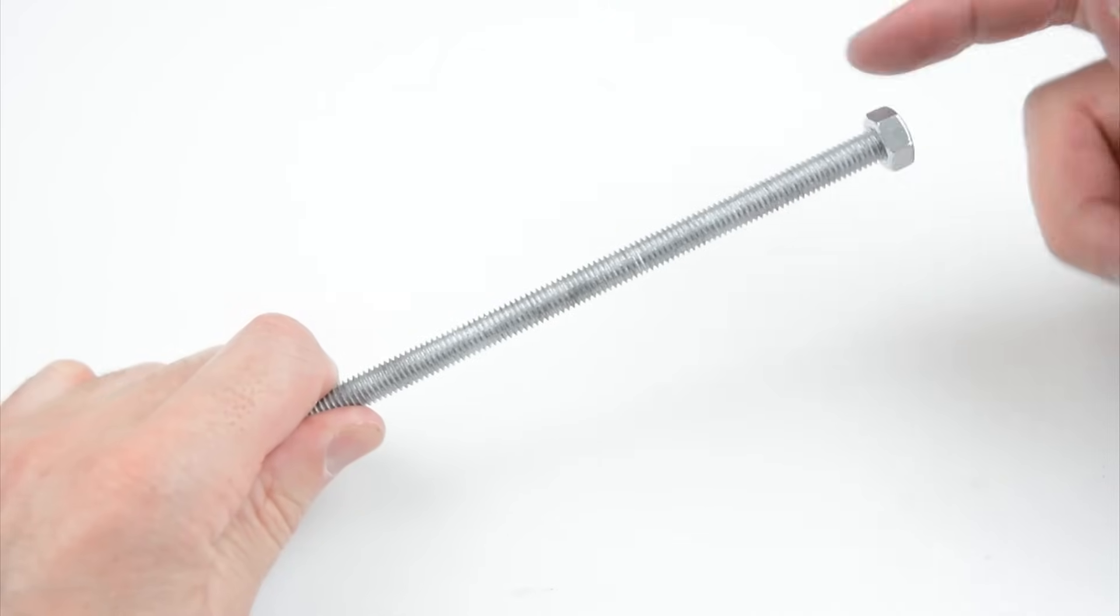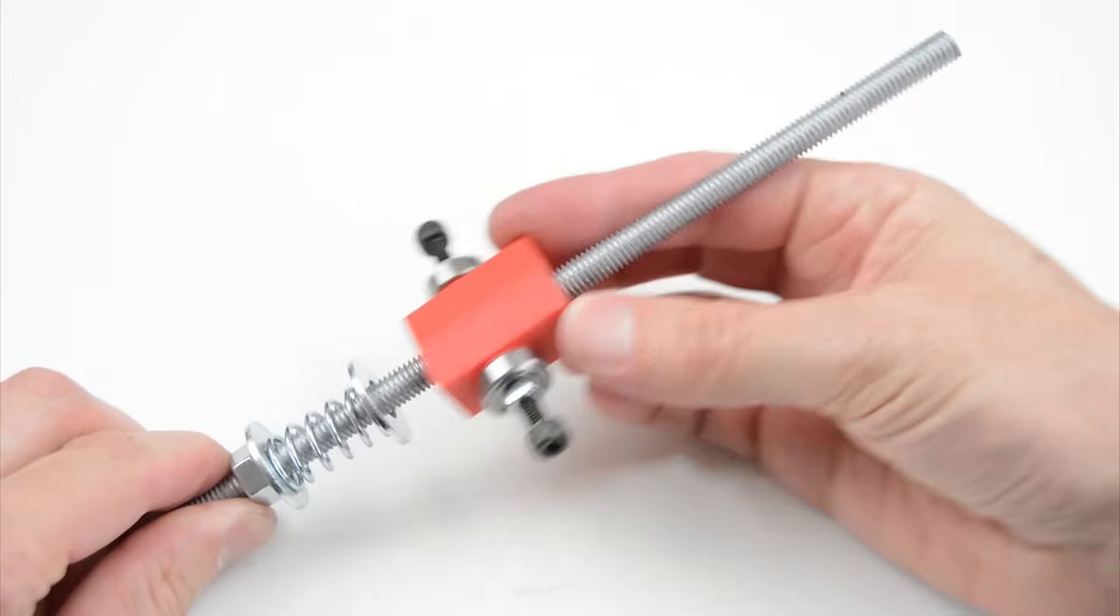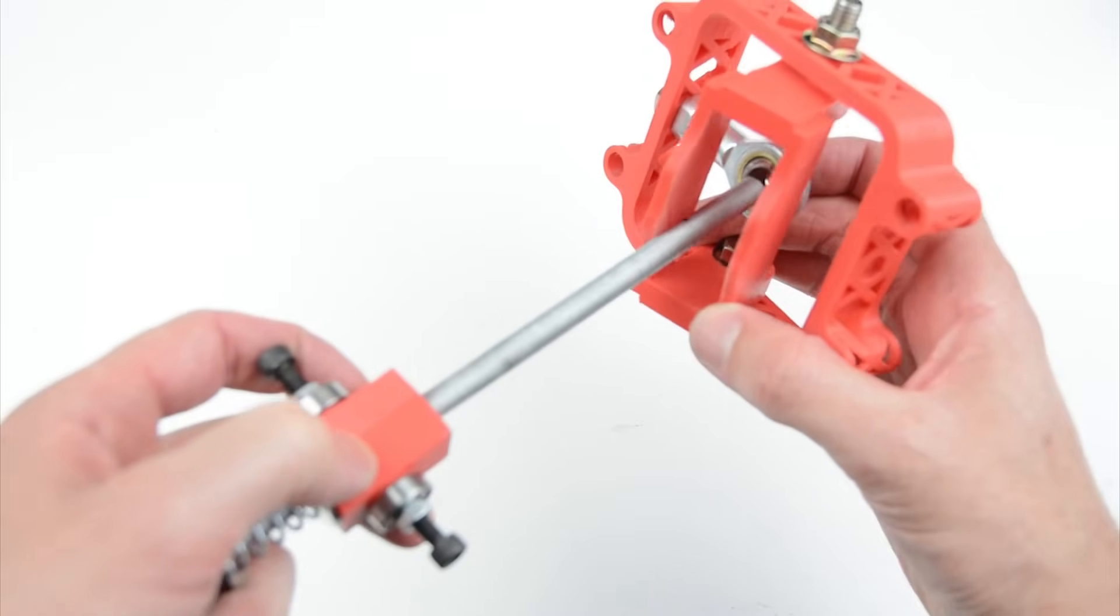On the longer threaded rod add one M8 nut, a washer, spring, second washer and the top centre assembly. Place the part through the centre assembly and through the ball joint.